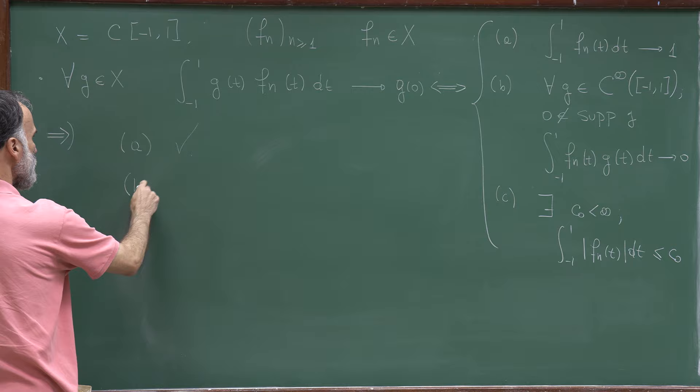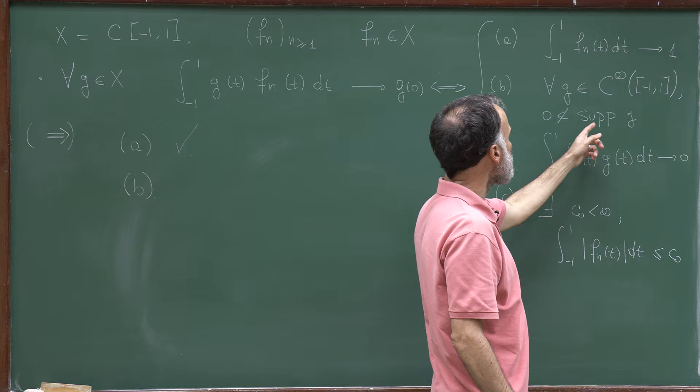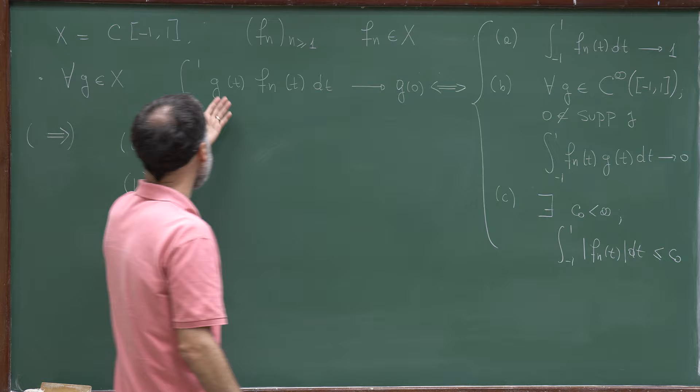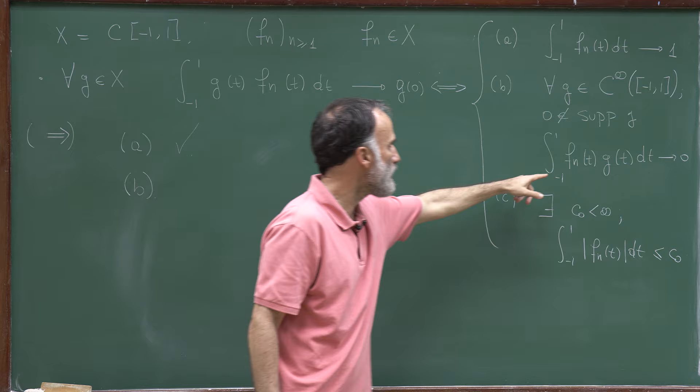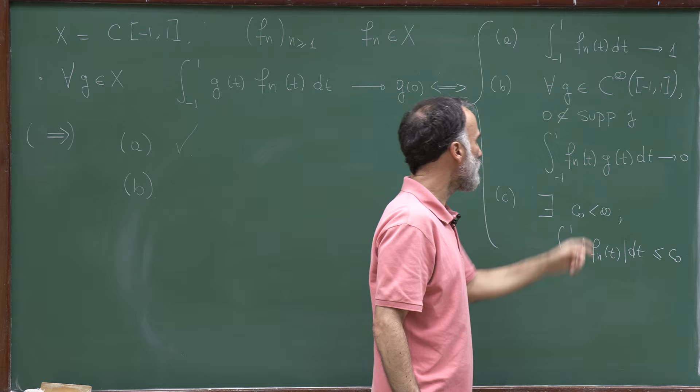Now let's prove condition B. Consider a C-infinity function G whose support does not contain 0. Since G is continuous, I can apply the convergence result, which tells me that the integral converges to G(0). But since 0 does not belong to the support of G, G(0) is 0, and therefore condition B is also trivially satisfied.